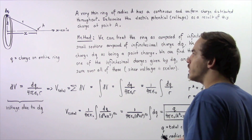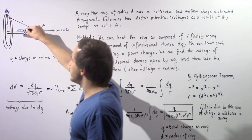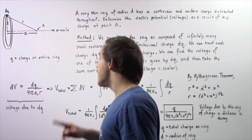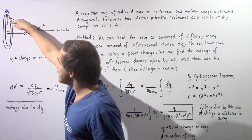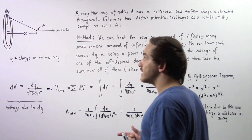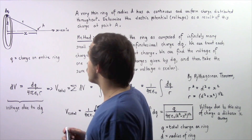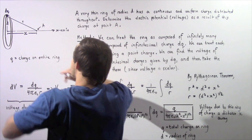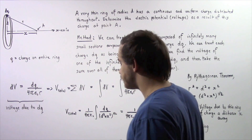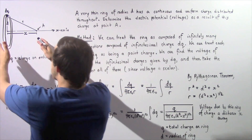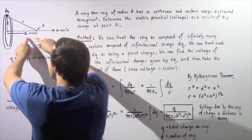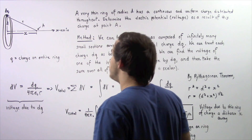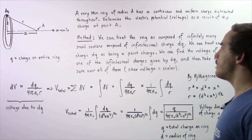Looking at the following diagram, we have our ring of charge that has a quantity of charge given by lowercase q. The radius of this ring is given by lowercase d. We want to calculate the voltage, the electric potential at point A, which is a horizontal distance x away from the center of our ring. Notice that x is a constant and d is a constant — that will become important in just a moment.